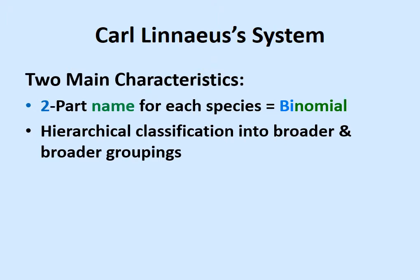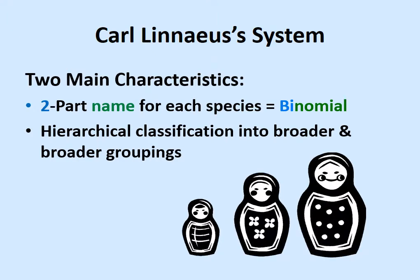Every living thing is part of a hierarchy where we classify living things that are related into broader and broader categories. Things that are members of the same genus are more similar to each other. Things that are members of the same family are still similar but less so. As we work up the hierarchy, we get more and more general — from the kingdom Animalia, which includes all kinds of animals, everything from a jellyfish to a slug, to a bird, to a human.